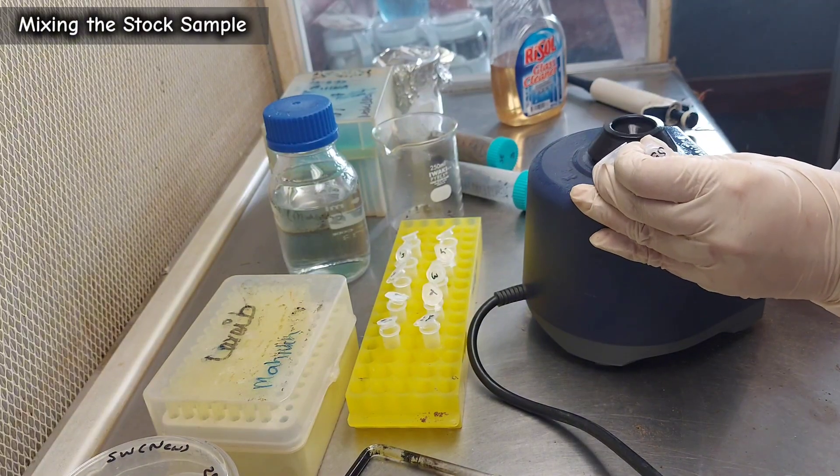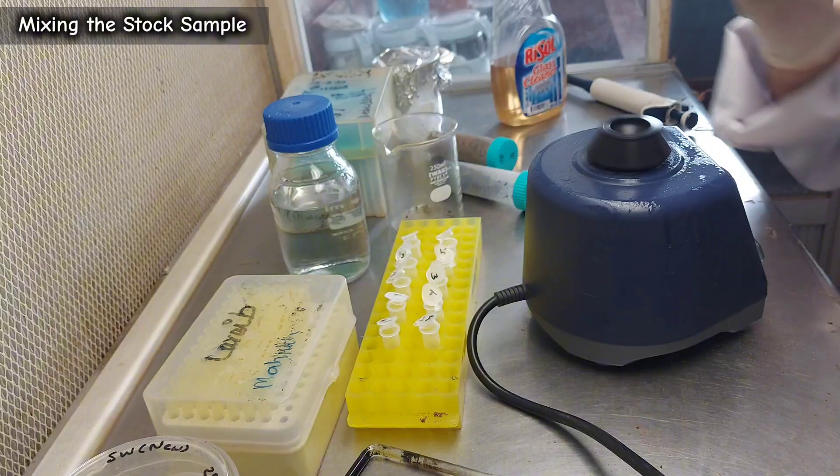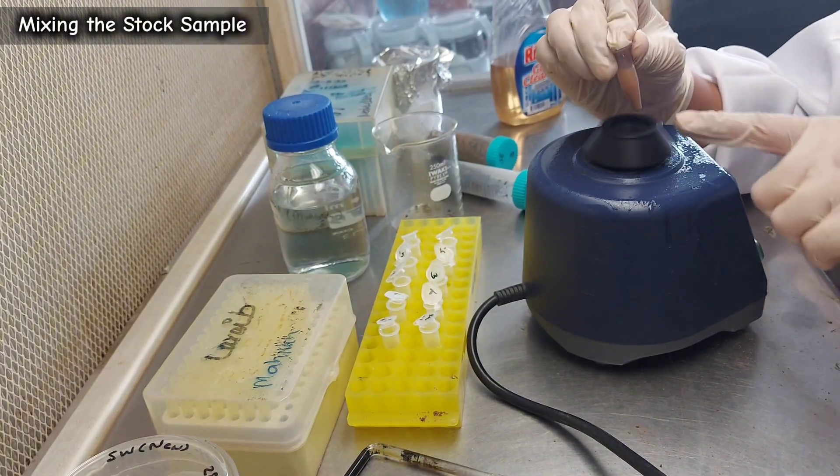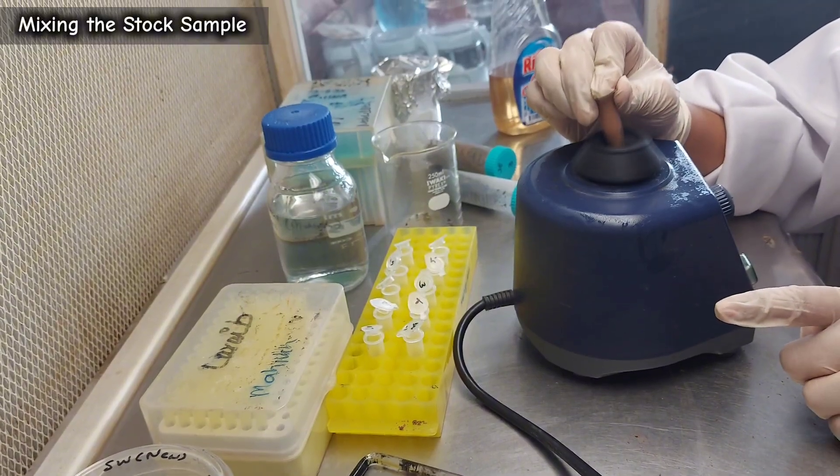Homogenize the stock sample using the vortex machine. For food microbiology, stock samples can also be prepared from food or meat, which can then be plated on selective media to isolate desired microbial flora.